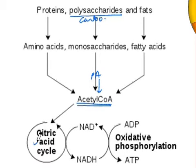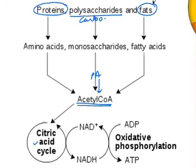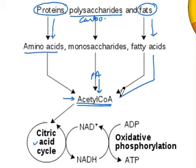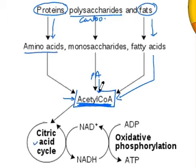Other than carbohydrates, proteins and fats also join this pathway. As we can see in this flow chart, proteins on breakdown give amino acids, which join at acetyl coenzyme A. Fats break down into glycerol and fatty acids, and these fatty acids also join at the same place — that means acetyl coenzyme A is the common substrate.